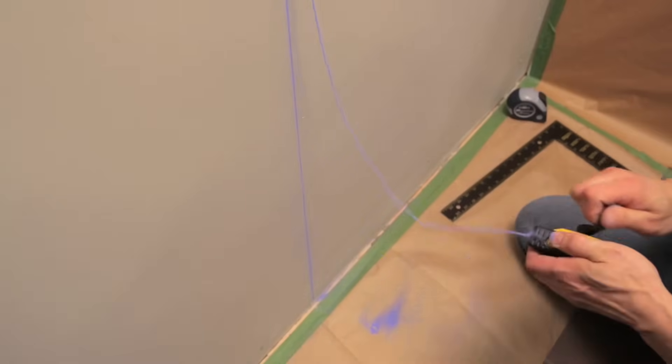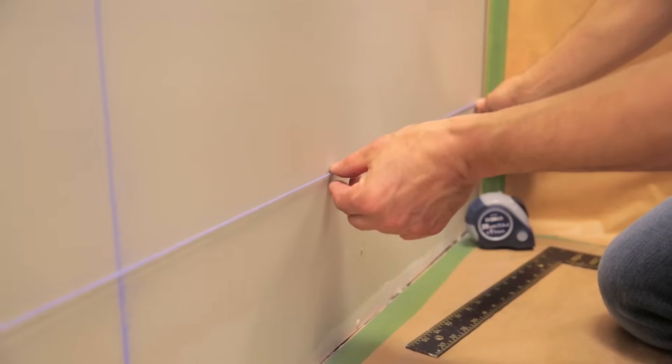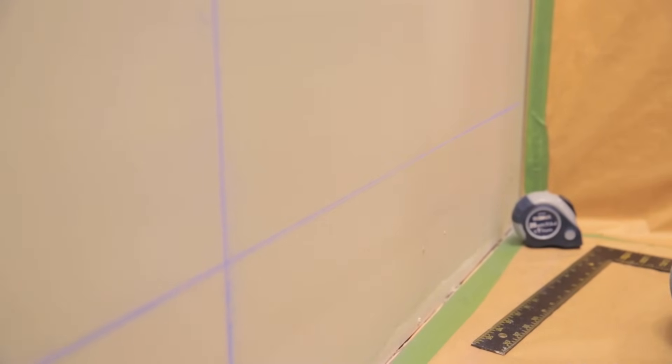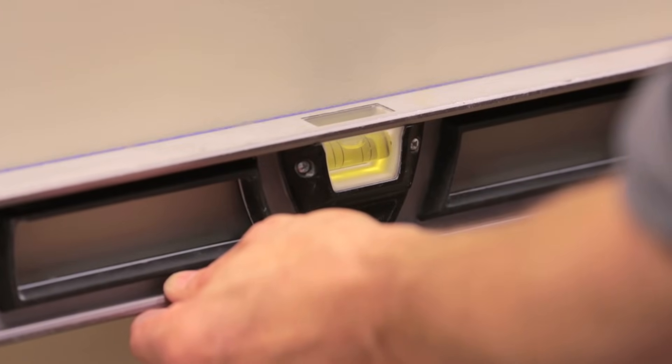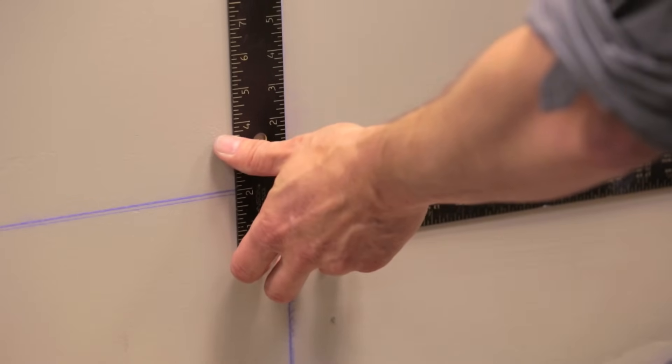Snap a vertical chalk line in the center of the wall and another line for each end of wall section. At the bottom of the wall, snap a horizontal line perpendicular to the first to indicate the top edge of the base row of tiles. Make sure that this line is level and square and that the first row of tiles won't be touching the floor.